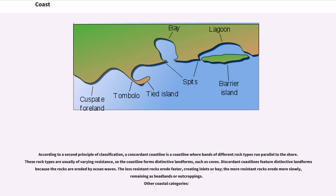According to a second principle of classification, a concordant coastline is a coastline where bands of different rock types run parallel to the shore. These rock types are usually of varying resistance, so the coastline forms distinctive landforms such as coves. Discordant coastlines feature distinctive landforms because the rocks are eroded by ocean waves. The less resistant rocks erode faster, creating inlets or bays; the more resistant rocks erode more slowly, remaining as headlands or outcroppings.